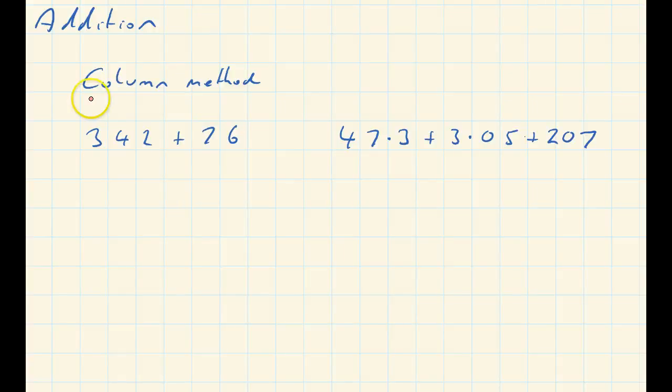Okay, for written calculation methods, I'd use column method every time. 342 plus 76, write it down. Make sure the columns are aligned - that 2 is the units, so 6 is the units, so 6 must go in there.